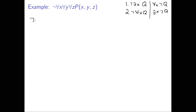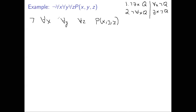Our first example is a proposition with three quantifiers. We have: not for-all-x, for-all-y, for-all-z, P(x,y,z). I'm spacing it apart to make it easier to reason about. I'll put some implicit parentheses here, because sometimes it's useful to visualize what the proposition is saying — to think about what part each quantifier is referring to.